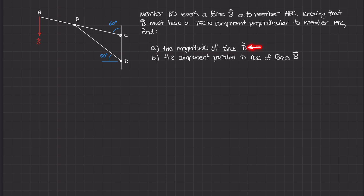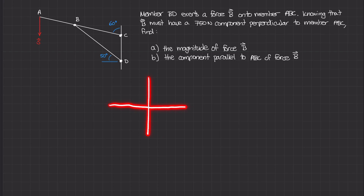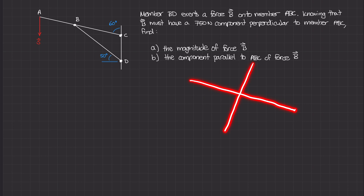Knowing that perpendicular component, we need to figure out the magnitude of B. For the second part, we also need the component of force B that is parallel to ABC. Our axis is shifted — it's not the standard x-y axis, but rather one aligned with ABC and another running perpendicular to it.